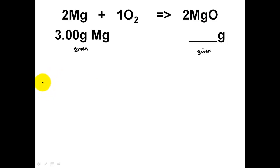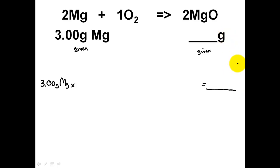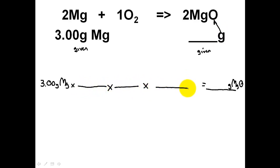Let's set this up. I always encourage you to write down the givens. The first given is exactly 3.00 grams of magnesium — it's important to write down the element and the unit grams. The other given is what I'm looking for: grams of magnesium oxide. This problem is going to have four steps involved, and writing the givens is the first one. Now the question is: how do I convert out of the givens?